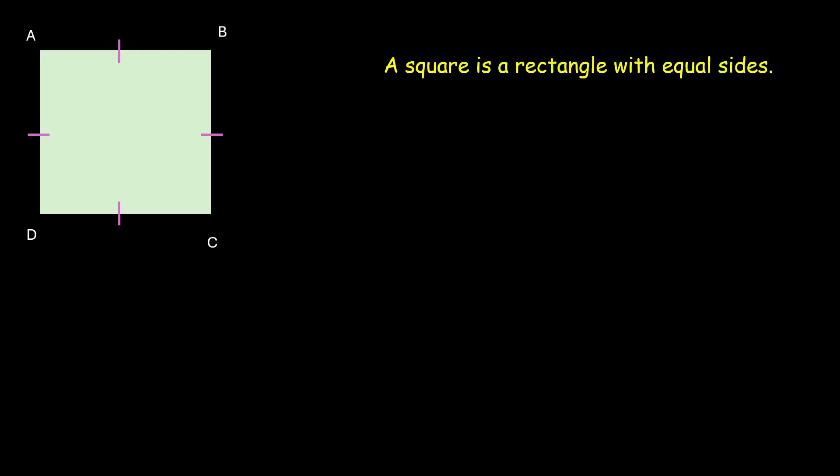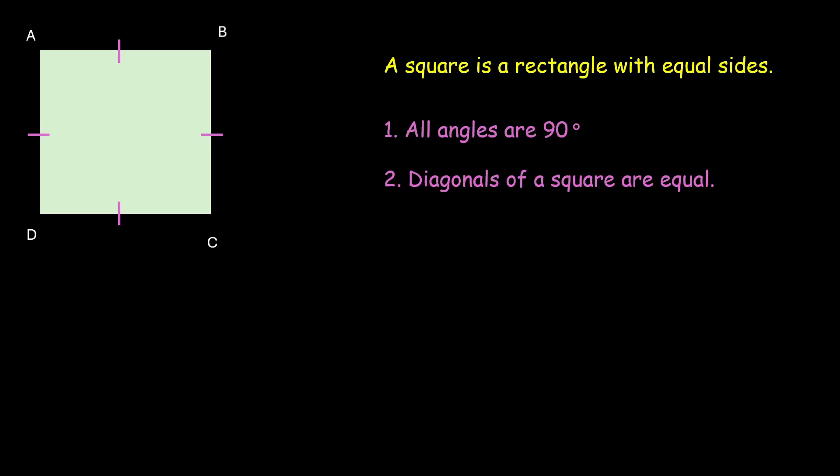Now let us do some more modifications. We have a rectangle — what if we reduce its length such that all of its sides are equal? It becomes a square. So a square is a rectangle with equal sides, meaning it is a special kind of rectangle and also a special kind of parallelogram. Since it is both a rectangle and a parallelogram, all angles are 90 degrees, the diagonals of a square are equal, and the diagonals bisect each other.